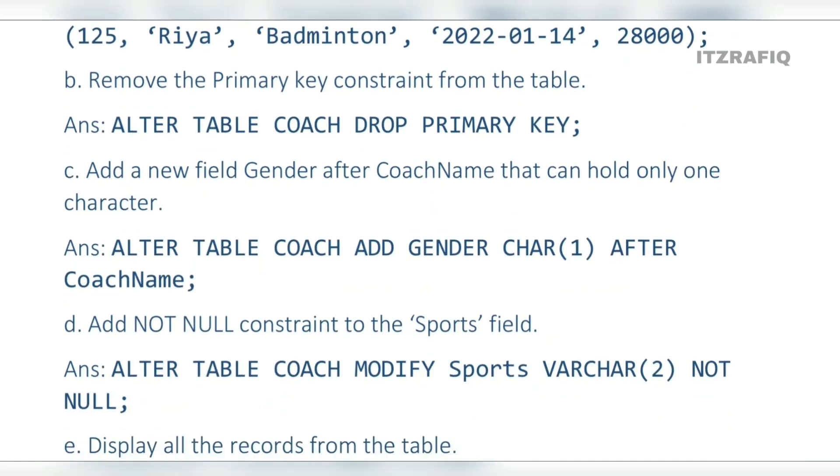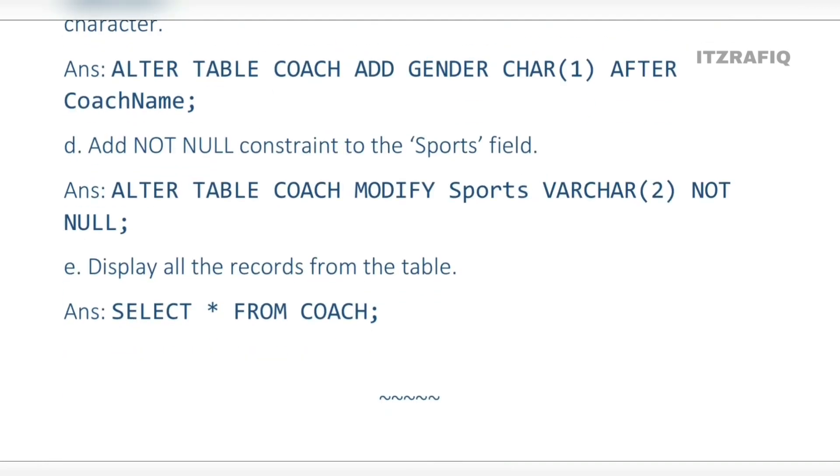Add a new column: ALTER TABLE COACH ADD GENDER with data type and size, using AFTER to specify the location. To add NOT NULL constraint, use MODIFY followed by the column name and data type.